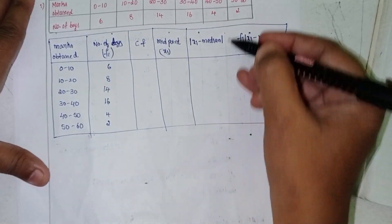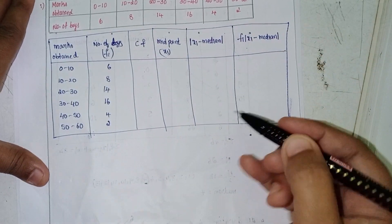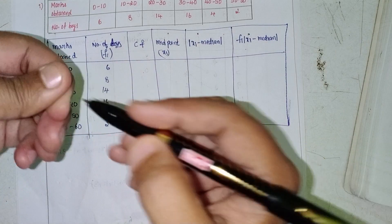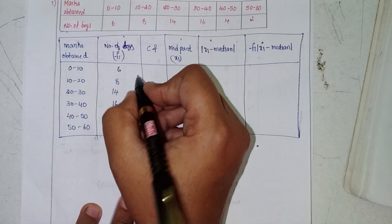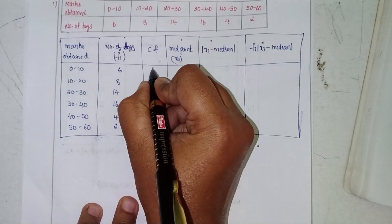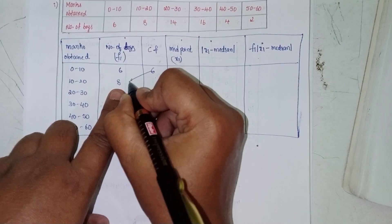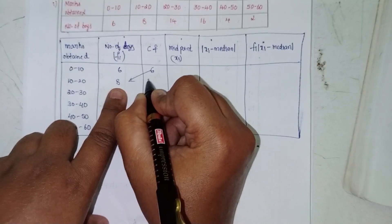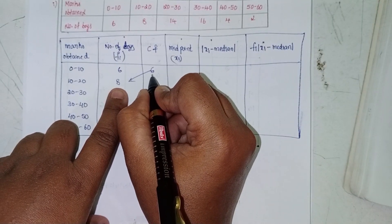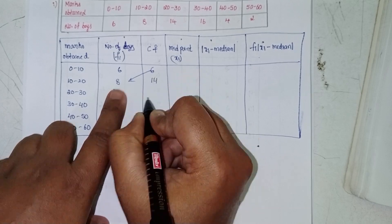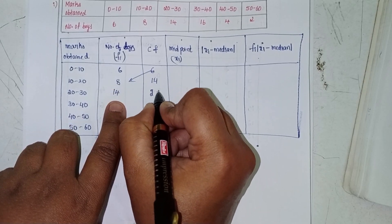Without scale, I will draw the frequency table. The cumulative frequency: first, 6. Then 6 plus 8 is 14.